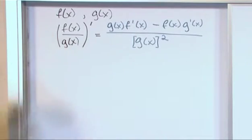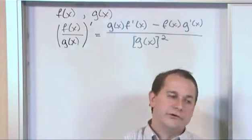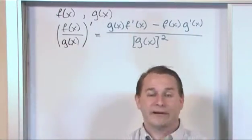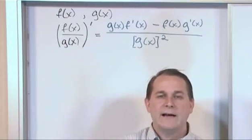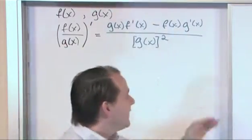f(x) times one over g(x), you do the product rule, which is first times the derivative of the second plus the second times the derivative of the first. If you do that and simplify it, what you're going to get is this.